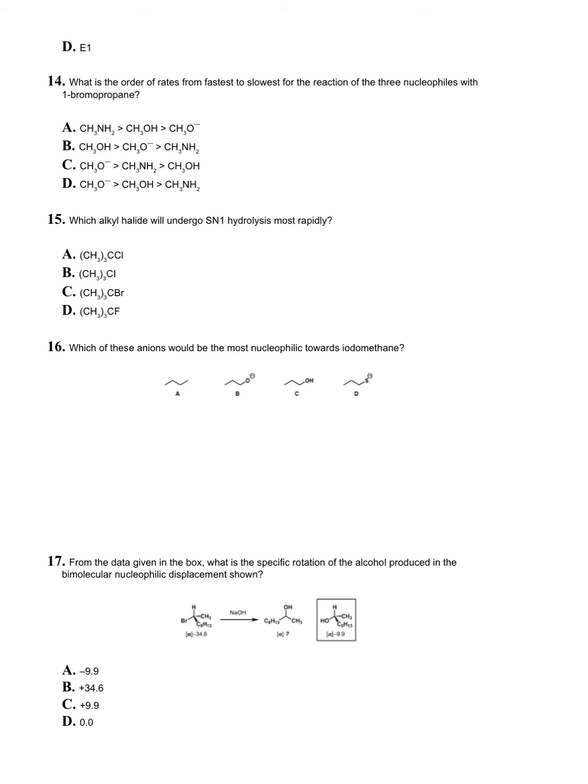Question fourteen: what is the order of rates from fastest to slowest for the reaction of the three nucleophiles with 1-bromopropane? You're comparing what these nucleophiles are. We said that negative is greater than neutral, and we said that C is greater than N, is greater than O, is greater than F when evaluating the elements across the period. We can eliminate A and B because C and D are showing the negative first. Now we're evaluating these last orders. N comes before O, so C is our correct answer.